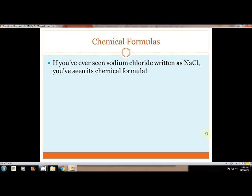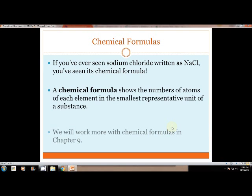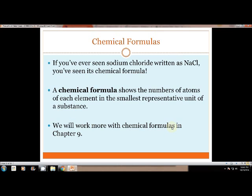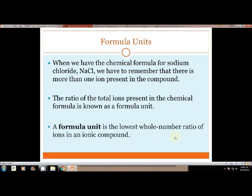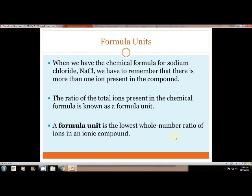Chemical formulas. Sodium chloride is NaCl. Have you ever seen it written like that? That's a chemical formula. We are going to deal with chemical formulas more in Chapter 9. A chemical formula shows you the number of atoms of each element in that representative unit of the substance. With a chemical formula, we can figure out a formula unit, a ratio of the total ions in that compound. We use subscripts, the numbers that are lower, to figure out this formula unit ratio.